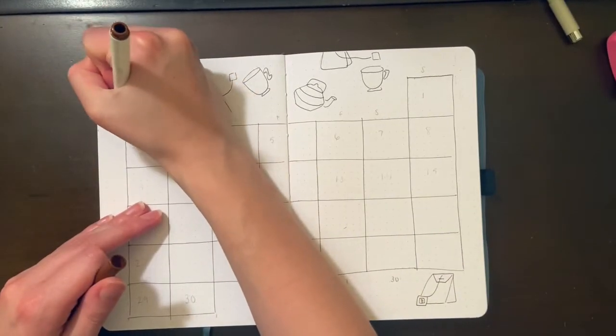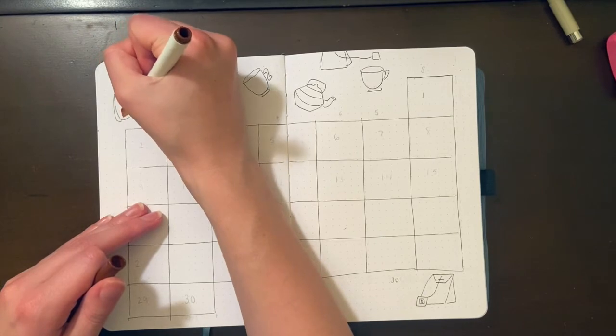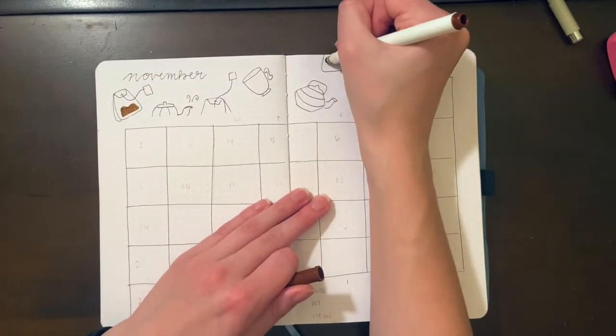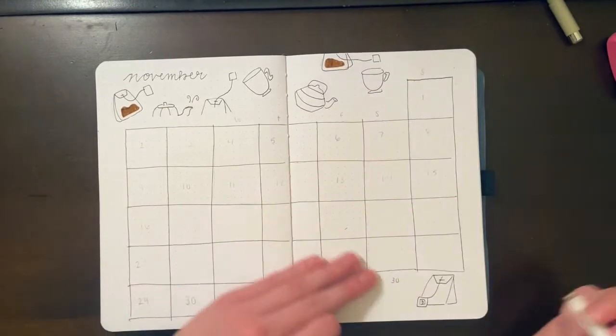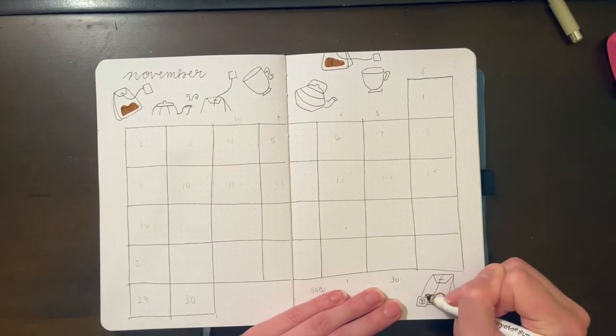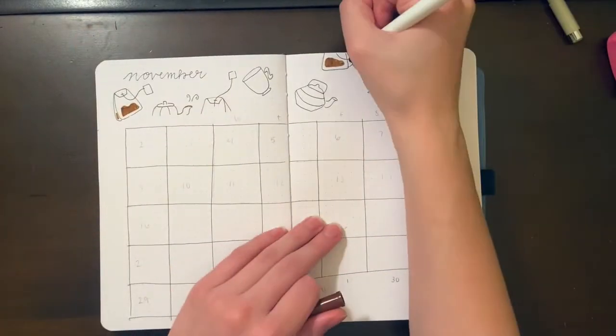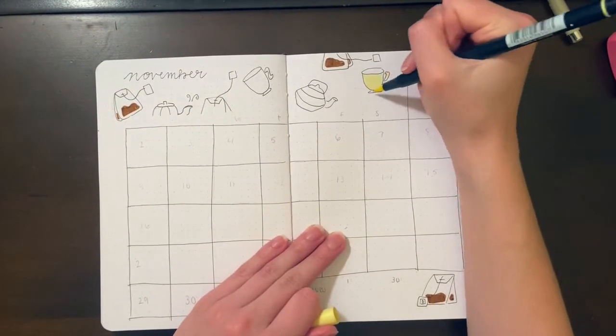Then I went back in with all of my different colors, using the brown to kind of draw a little bit of tea sitting at the bottom of the bags, the different shades of yellow, teal, and green to draw on the tea labels, the mugs, and the kettles, adding in different designs and stripes to keep them interesting.